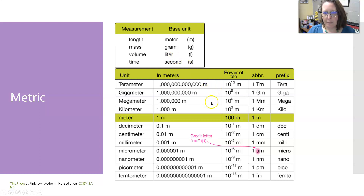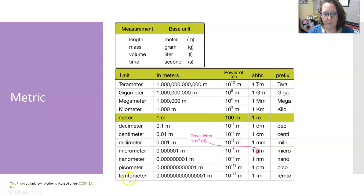We also have some prefixes that can be added, like deci, centi, milli, macro, nano, pico, and femto. These — deci, centi, milli, and so on — are smaller than the base units.